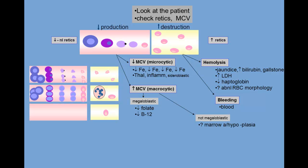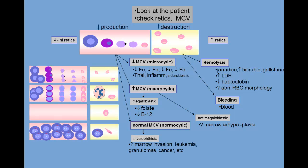The non-megaloblastic macrocytic anemias are seen in some patients with aplastic or hypoplastic marrows. The normocytic anemias can be difficult to sort out and often require examination of the bone marrow. One clue might be the presence of teardrop red cells and immature marrow precursors in the peripheral blood — the so-called myelophthisic anemias. That ominous sign would take you right to examination of the bone marrow to look for stuff that shouldn't be there, like metastatic tumor cells, fibrosis, granulomas, storage cells.